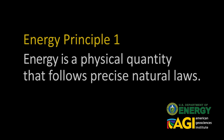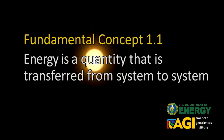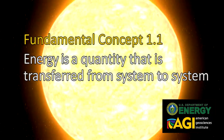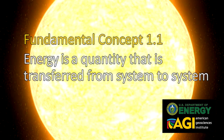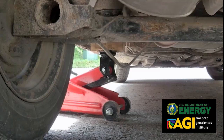This is Energy Principle 1. Energy is a physical quantity that follows precise natural laws. Energy is a quantity that is transferred from system to system. Energy is the ability of a system to do work.